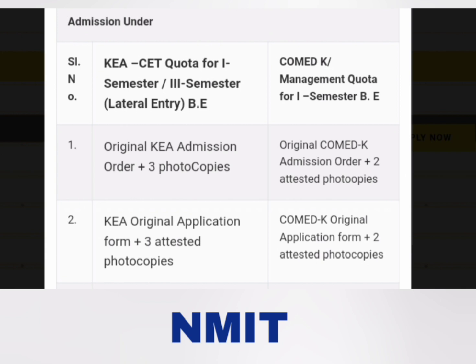The second document is the original KEA application form which you filled during online application submission, plus three attested copies. Similarly, COMED-K and management quota students need to carry the original COMED-K application form plus two attested photocopies.